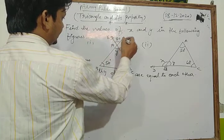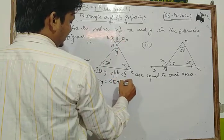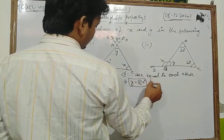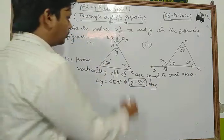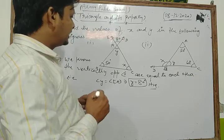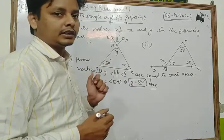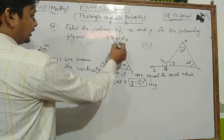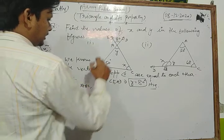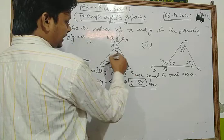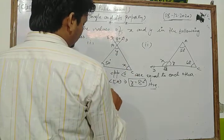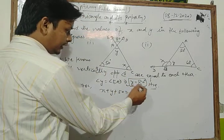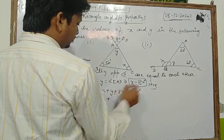Now in triangle ABC, applying the angle sum property: the sum of all interior angles equals 180 degrees. So x plus y plus 50 equals 180 degrees. Substituting the value of y as 80 degrees: x plus 80 plus 50 equals 180, giving us x plus 130 equals 180.